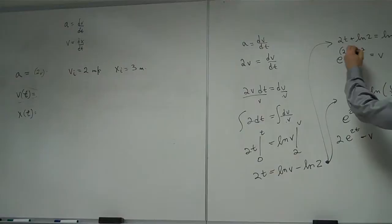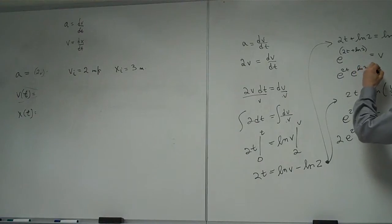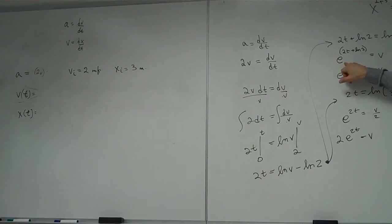Now I need to separate this out. So this is e to the 2t times e to the ln(2). It's kind of like x to the 2 plus 3 is equal to x squared times x cubed. So when I have something plus something in an exponent, I multiply them together. And e to the natural log of 2 is otherwise known as 2.